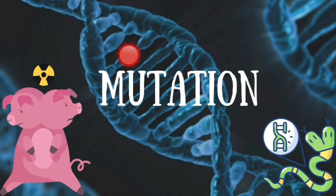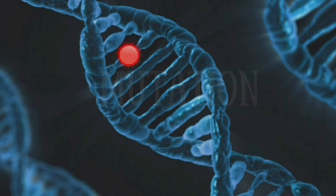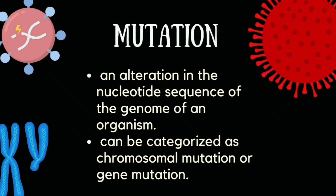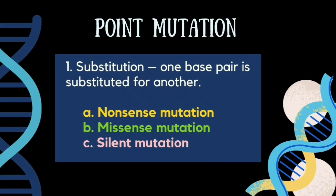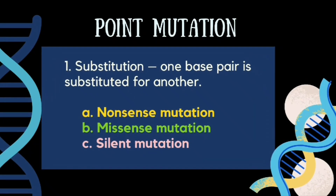What is a mutation? Mutation is an alteration in the nucleotide sequence of the genome of an organism. It can be categorized as chromosomal mutation or gene mutation. We have three types of substitution: nonsense, missense, and silent mutation.